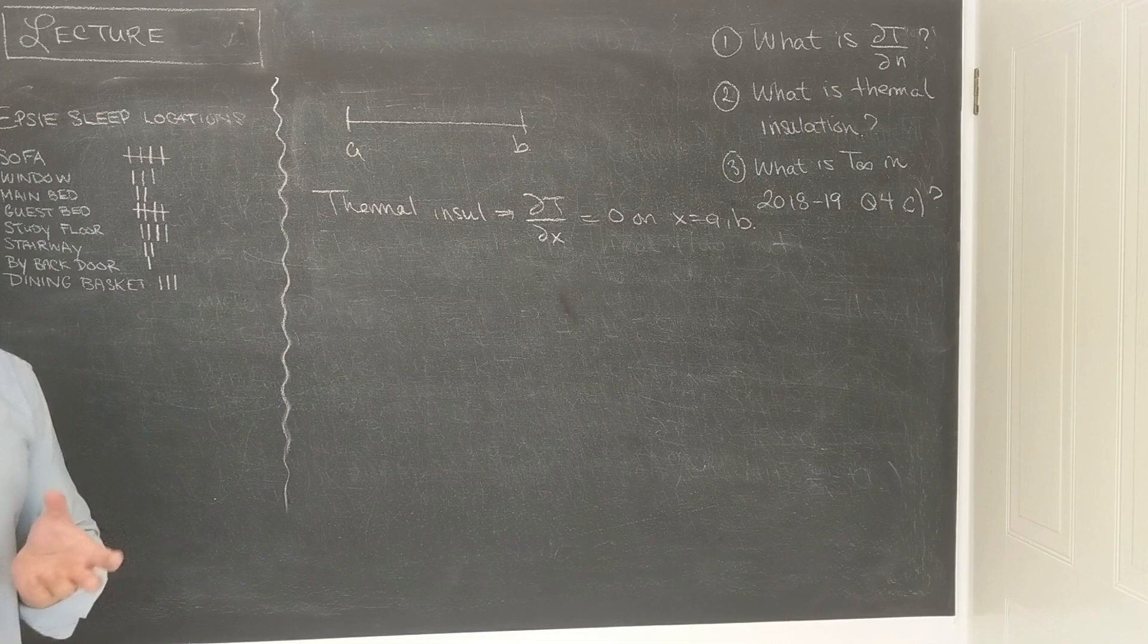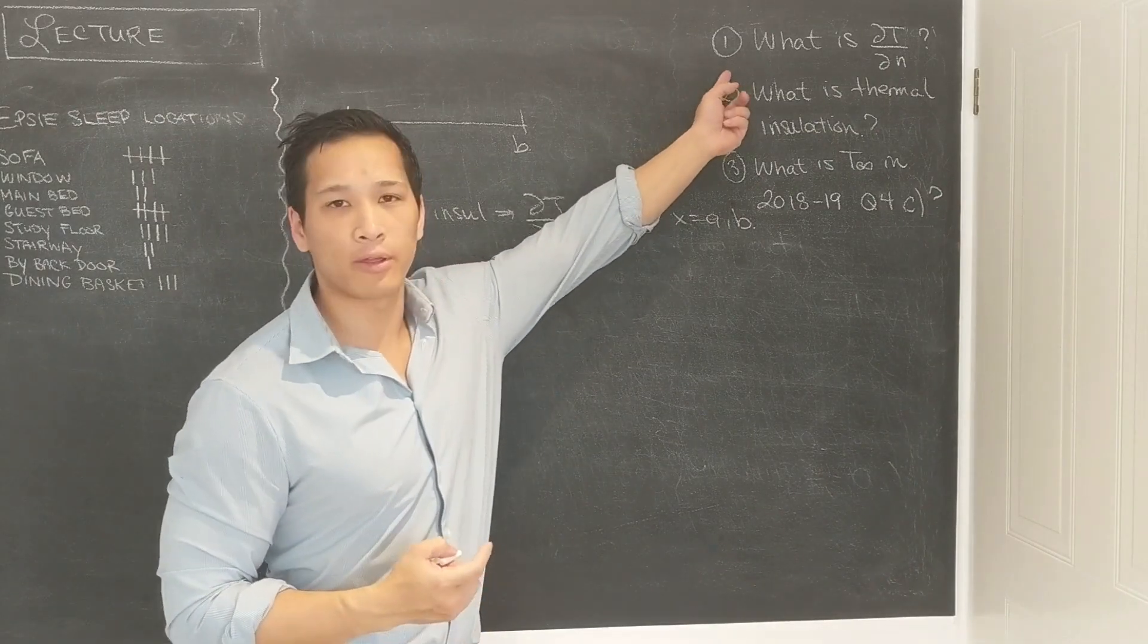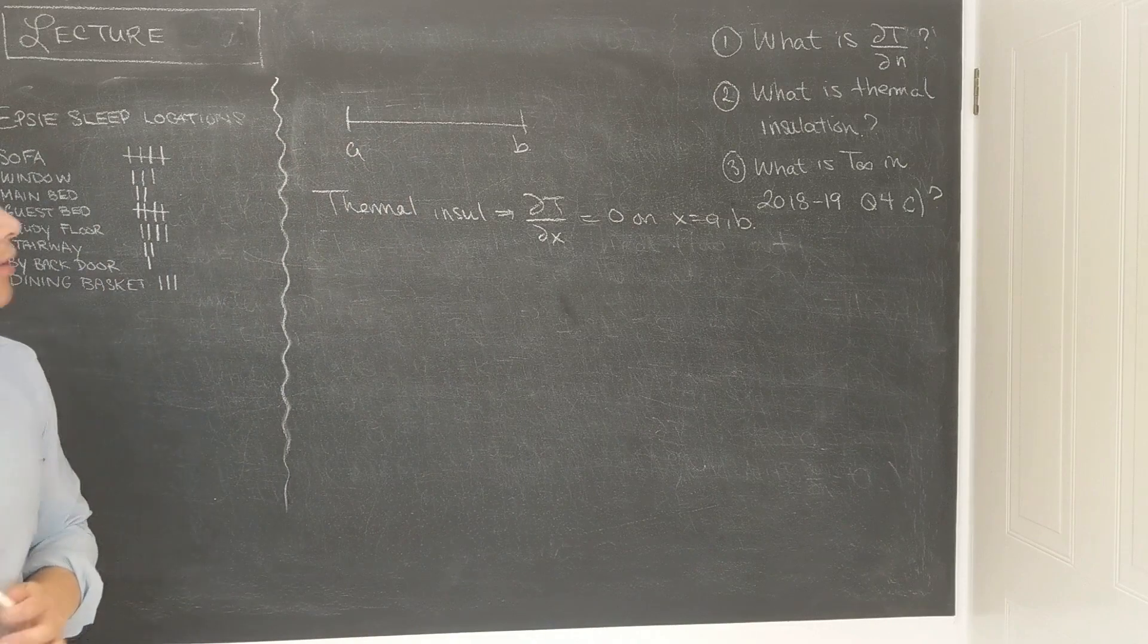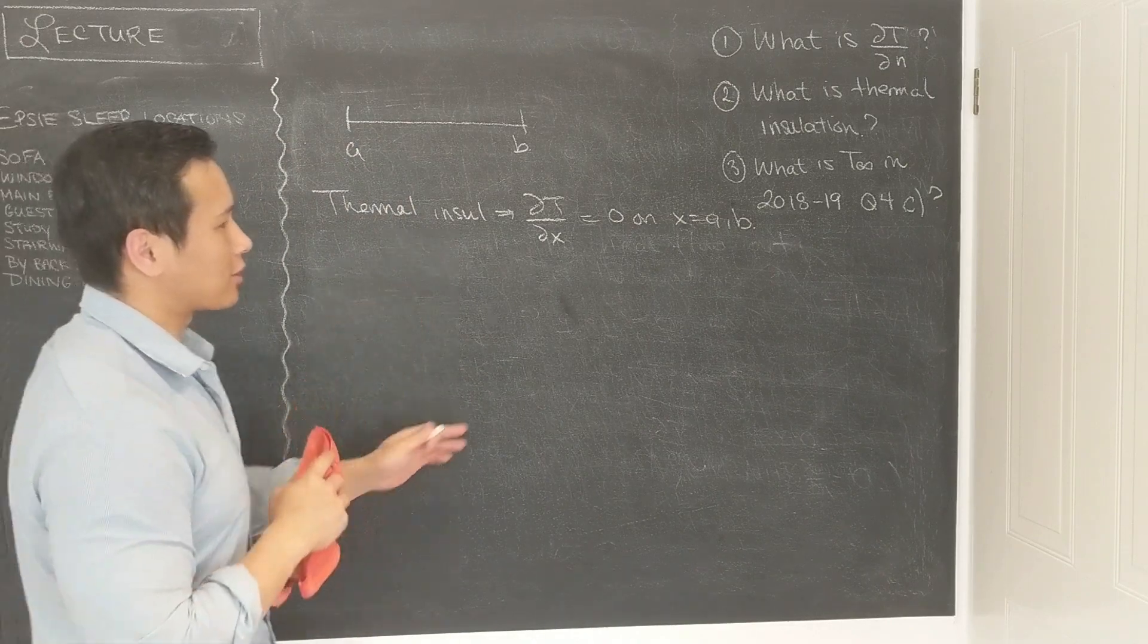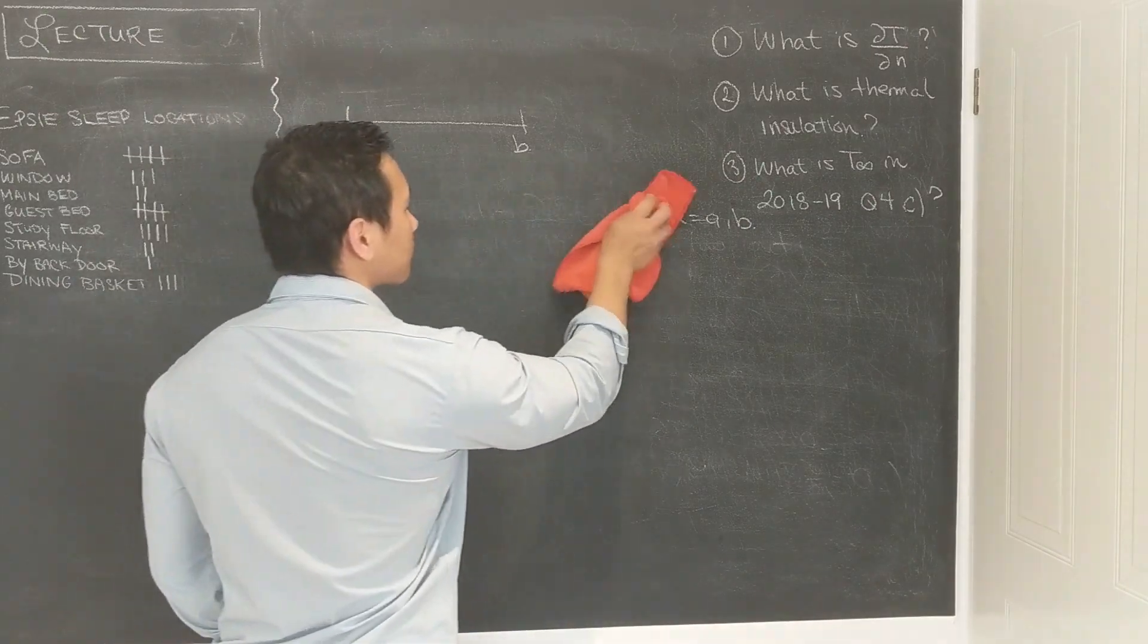So for a one-dimensional problem, this is what thermal insulation means. For something more complicated, you would have to find the normal direction and then calculate it in the fashion we described in 1. Okay, so now finally let's talk about this question 4c in the exam last year.